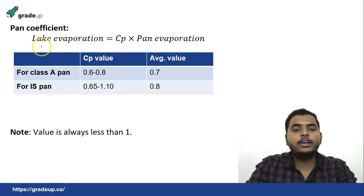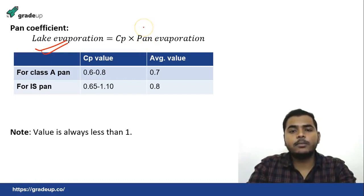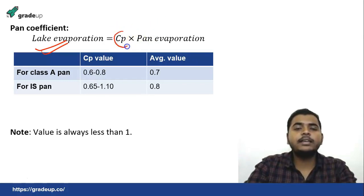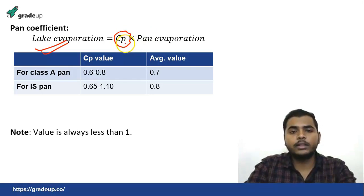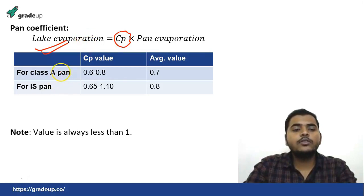Lake evaporation is not the same as pan evaporation because there may be different factors — such as the presence of soluble salts which decreases evaporation rate. So we multiply by a pan coefficient Cp, which is always less than 1, meaning lake evaporation will always be less than pan evaporation. For Class A pan the Cp range is 0.6 to 0.8.